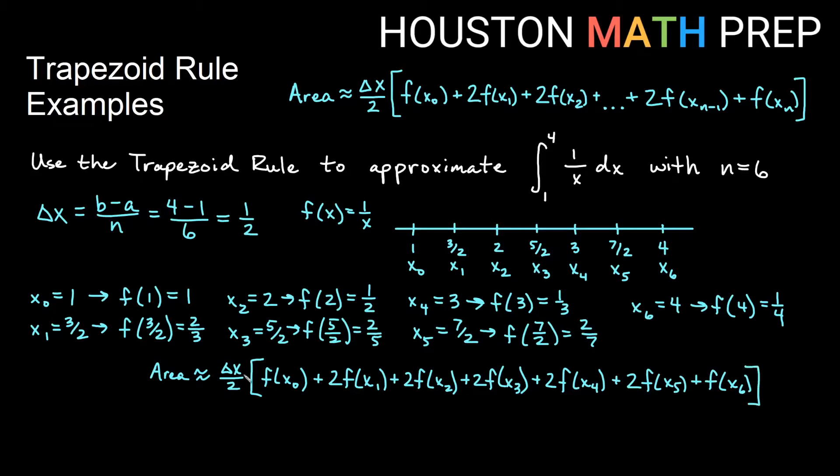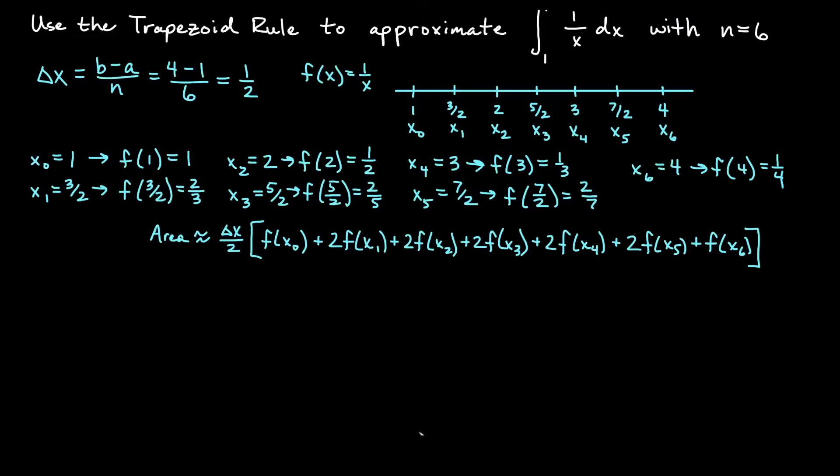Now let's plug all of our information in and see what we get. So we'll approximate the area with, if I have delta x is 1 half, 1 half over 2 is going to give me 1 fourth there.